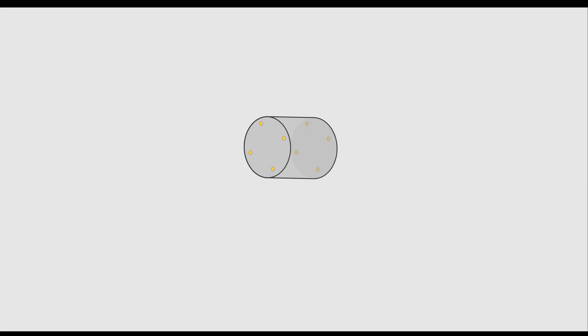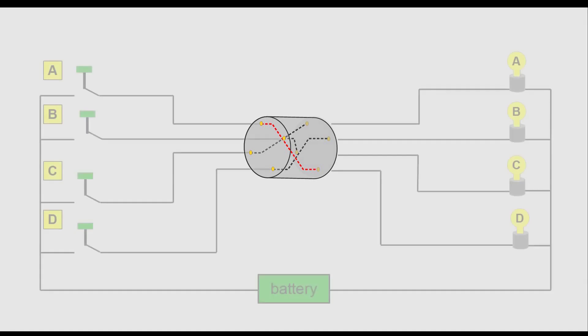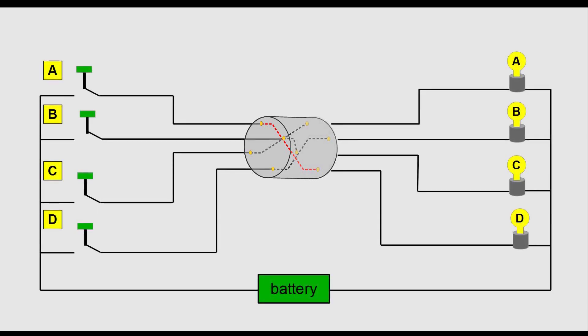If the contacts of the rotor are not connected with the directly opposing side, then key A is not connected to the same light anymore.